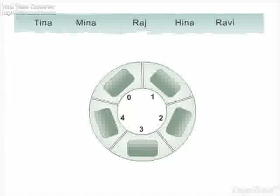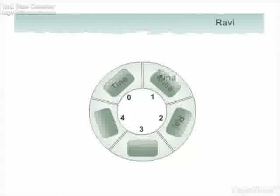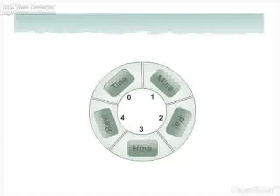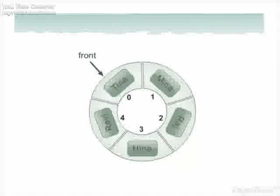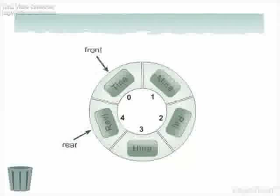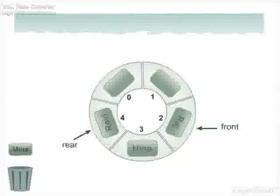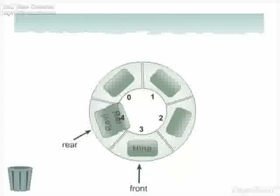To understand this, consider an example where a queue consists of names: Tina, Meena, Raj, Hina, and Ravi. The circular queue is represented in a circular form. Here, front is at name Tina and rear is at name Ravi. Now suppose we delete the elements Tina, Meena, and Raj from the queue — then front is at Hina.